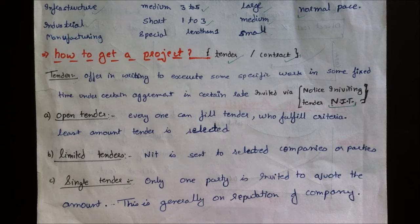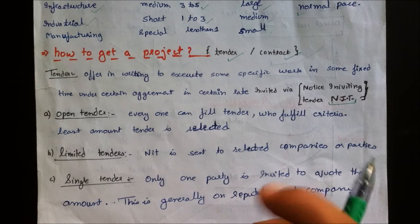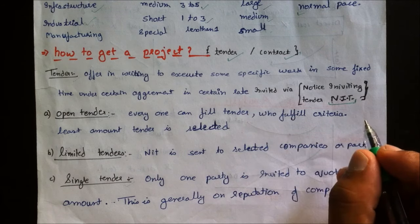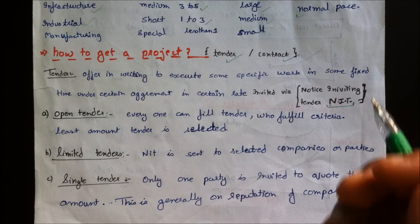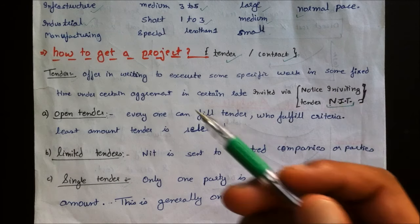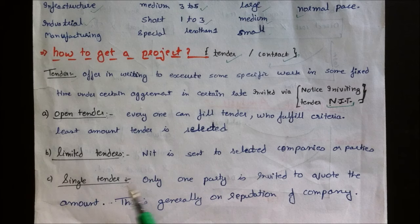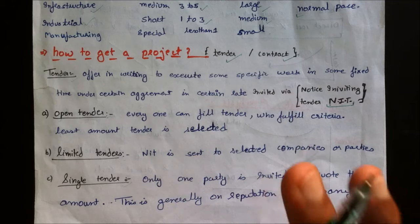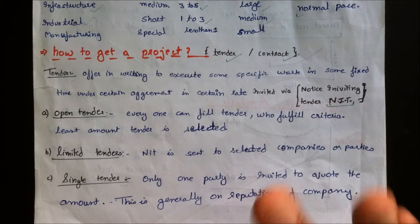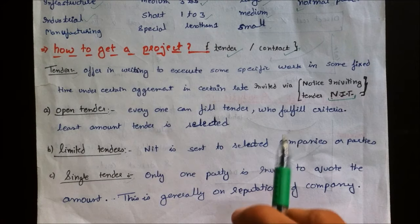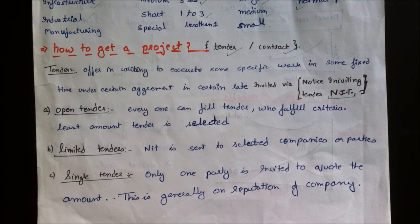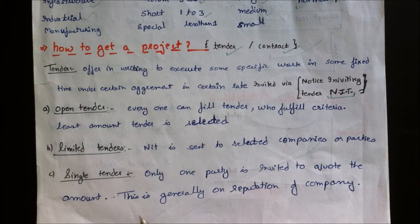A project is generally acquired via tender or contract under an executive engineer. A tender is an offer in writing to execute some specific work in a fixed time under a certain agreement and at a certain rate. There are three types: open tender, limited tender, and single tender.